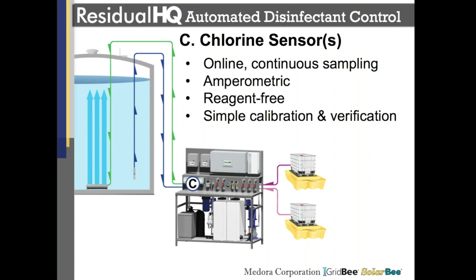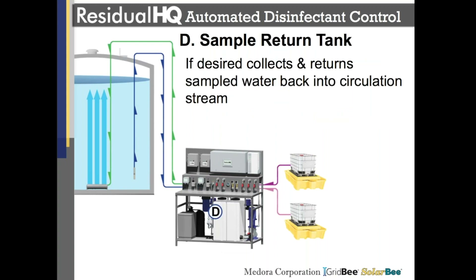The next components are the chlorine sensors. These are online, continuously sampling, and amperometric — so there are no reagents to worry about, replenish, or dispose of. They're located towards the front of the system so any calibration, sample verification, or maintenance is straightforward and easily accessible. Any discharge from these sensors is collected and optionally returned to the tank or sent to drain, so no additional infrastructure is needed — it's all handled locally by the workstation.